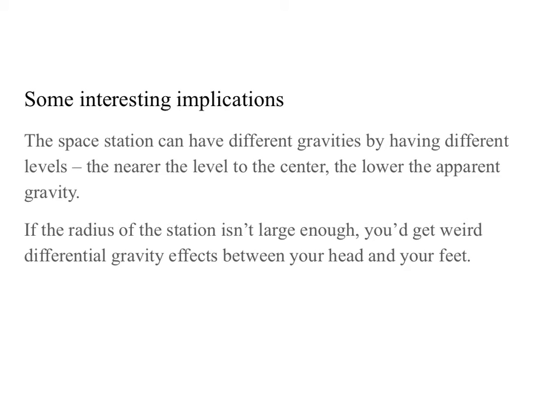Some implications: the space station can have different gravity levels by having different actual levels, because this quasi-g is omega² r. As we increase distance from the center, we also increase the effect of gravity — the weight that you feel. Conversely, as we head towards the center, gravity gets weaker.